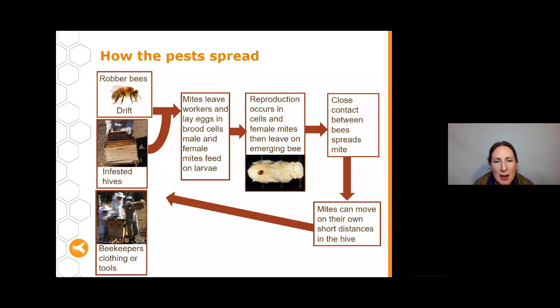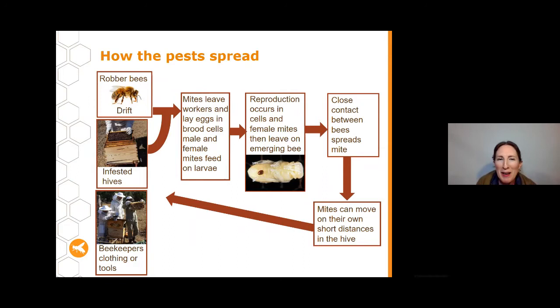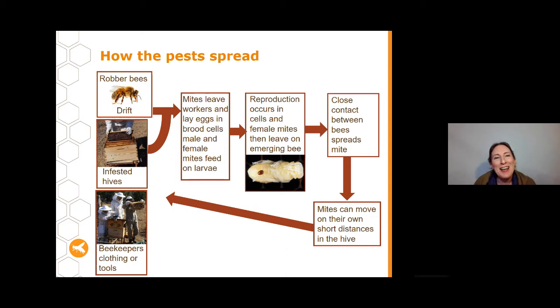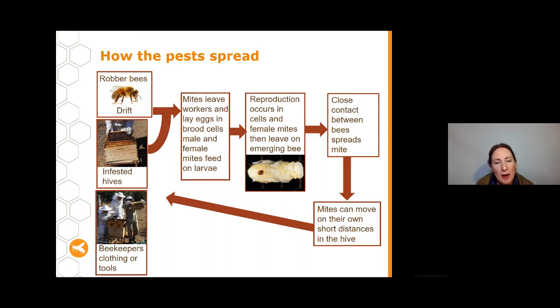How are these pests spread around? They're all spread in pretty much the same way. Robber bees going to another hive to steal honey or pollen may bring or take Varroa, Tropilaelaps, or even Braula fly on their bodies, transferring them through close contact with other bees. Similarly, bees that drift — accidentally going back to the wrong hive — can take those pests with them. Pests can also be spread on infested hive components: if you take a frame from an infested hive and put it into another, or use the same tools on an infested hive as on a clean one, you can transfer the pests.